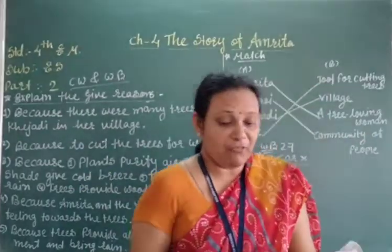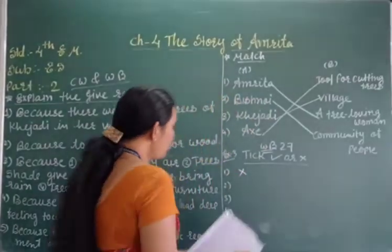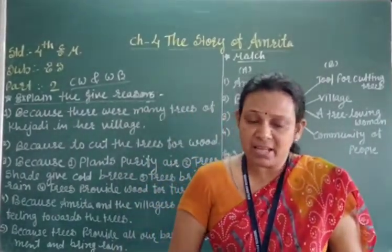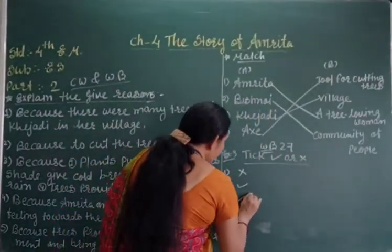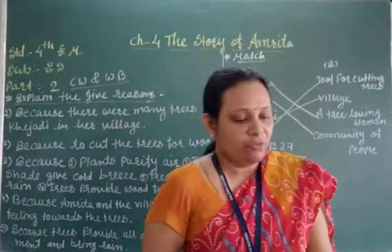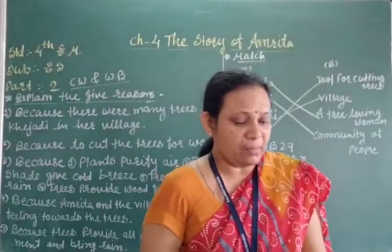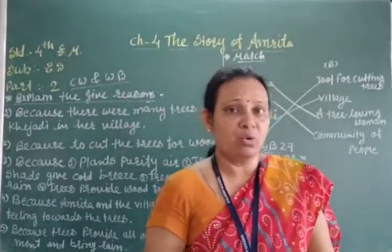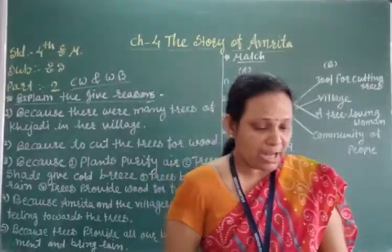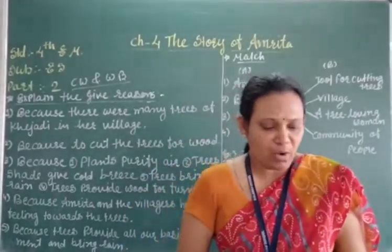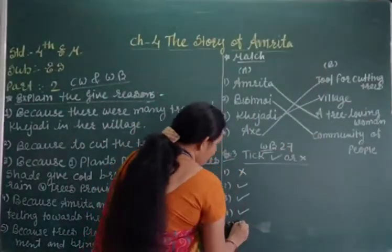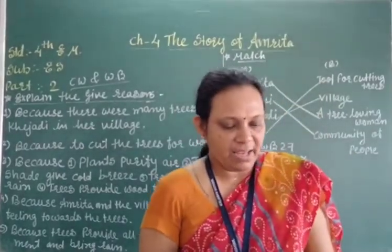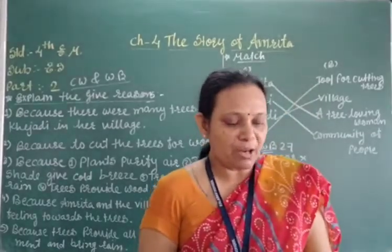Second number: Amrita and the people of her village loved trees — yes, it is right. Third number: In Amrita's village Khejri, there were many Khejri trees — yes, this statement is right. Fourth number: The king finally declared that no one would cut trees in Amrita's village — yes, after seeing all the people sacrifice their lives, the king ordered that no one can cut the trees or harm the animals. That is right. Fifth number: Amrita and the other villagers killed the man who had come to cut the trees — no, Amrita and the villagers did not kill the man; rather, the man came to kill them. So it is wrong.